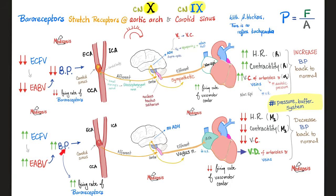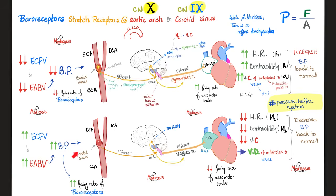Conversely, if you start with hypertension, the opposite happens. The baroreceptors in the carotid sinus and aortic arch feel the hypertension — there is too much pressure, so they fire more. When there was hypotension, they fired less. The greater the pressure, the greater the firing. The baroreceptors send afferent fibers to the brain signaling hypertension. The brain calms things down by sending parasympathetic efferents — rest and digest. The vagus nerve decreases heart rate, decreases contractility, and causes vasodilation, all of which decrease blood pressure back to normal.